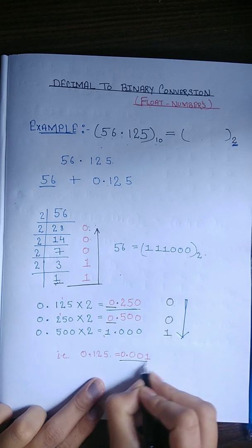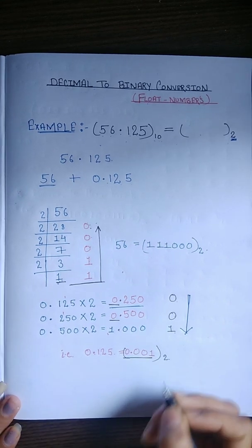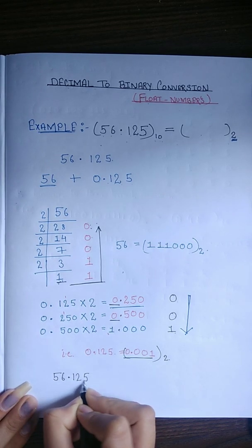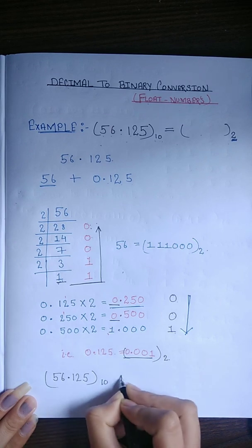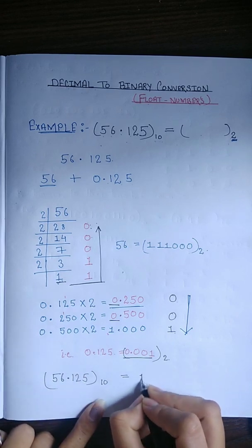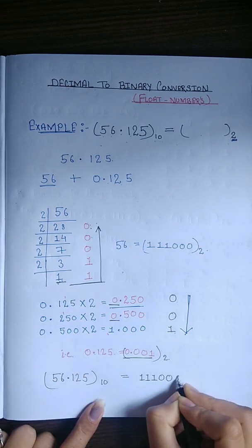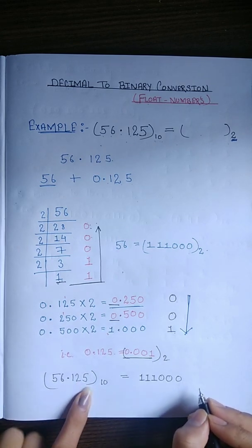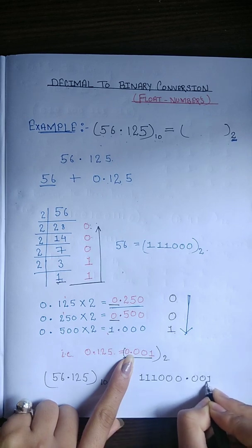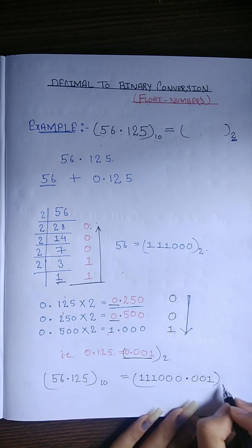This is in binary form. Thus, our final result is: 56.125 in decimal form converts to 1 1 1 0 0 0 for the integer part 56, and 0.001 for the fractional part 0.125. So the required answer in base 2 is 111000.001.